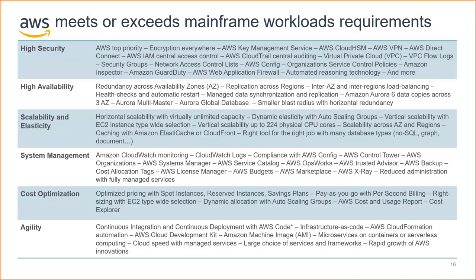For system management, there is a large choice of services available — centralized monitoring, centralized load management, centralized backup, system automation, and many more. We also provide many services and features designed to help control and reduce costs, such as cost explorer and optimized pricing. Regarding agility — a very important aspect for businesses — we can increase agility of workloads on AWS on many dimensions: starting with infrastructure automation and infrastructure as code, continuing with agile application DevOps relying on AWS code services. For example, we can create CI/CD pipelines with CodeCommit, CodeBuild, CodePipeline, and CodeDeploy. All these capabilities help meet or exceed mainframe workload requirements.